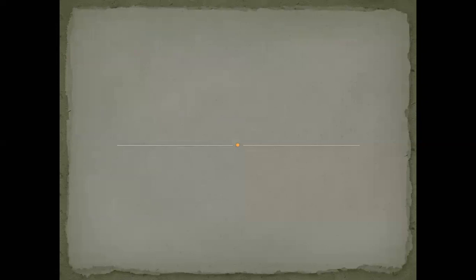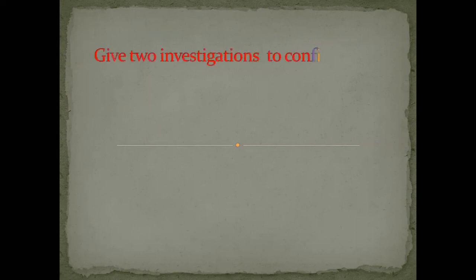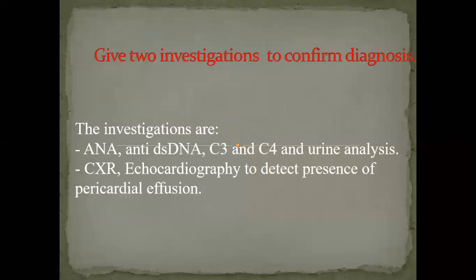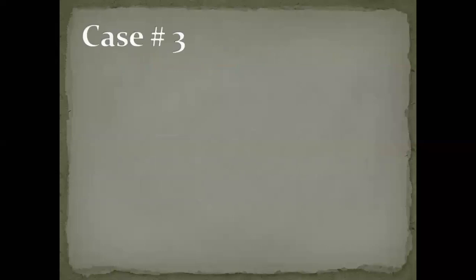Investigations to confirm case two include: ANA, anti-double-stranded DNA, complement 3, complement 4, and anti-Smith to confirm lupus. For the pericardial affection, we need not only chest X-ray showing cardiomegaly but echocardiography, which is the most sensitive modality to detect even very small amounts of pericardial effusion.